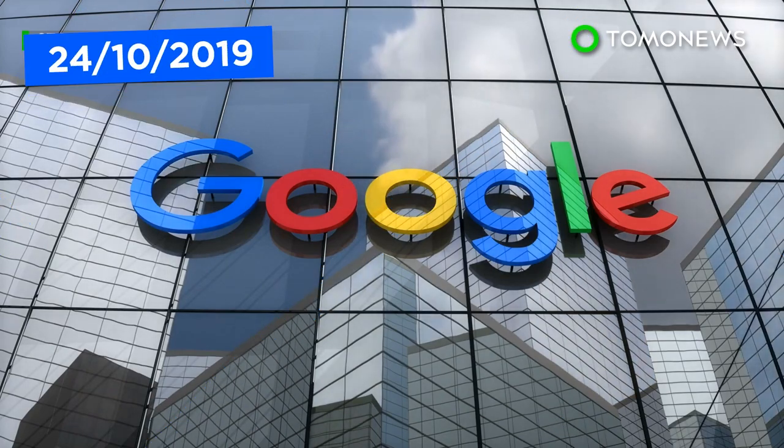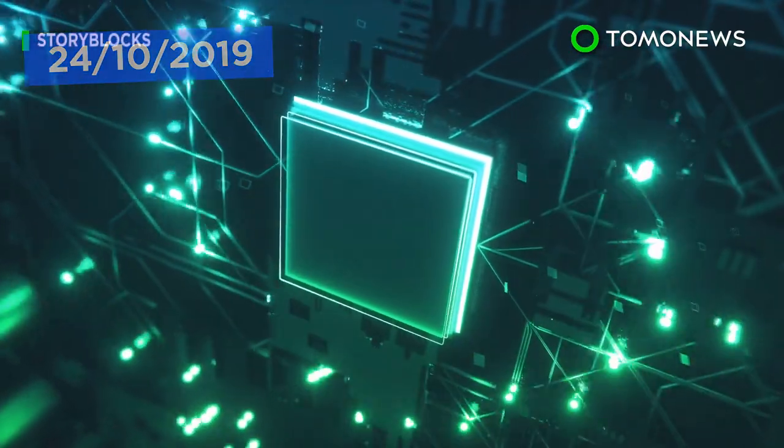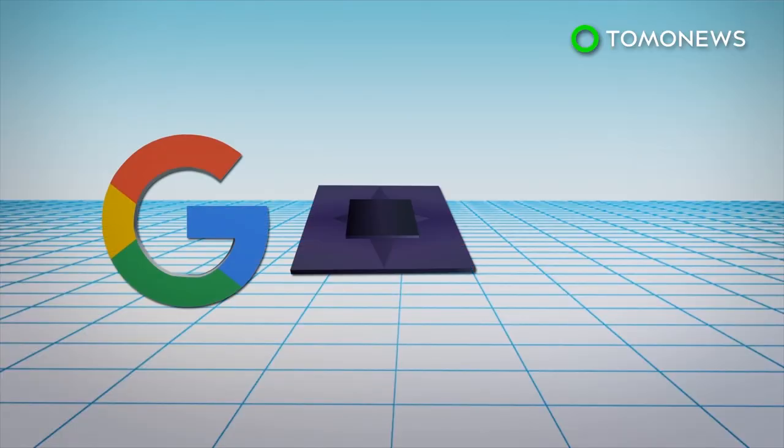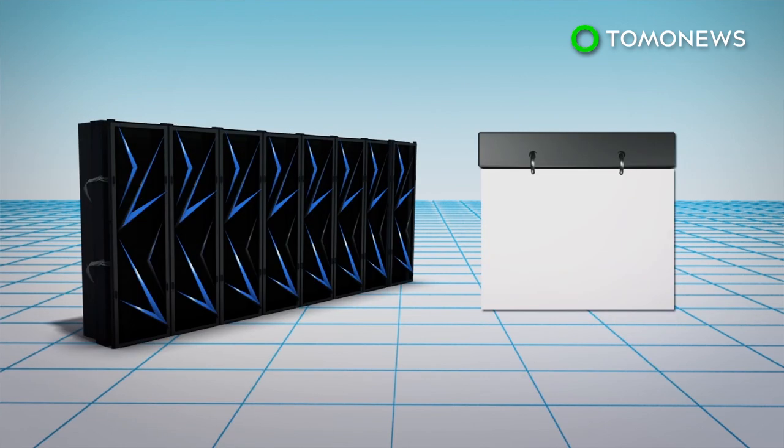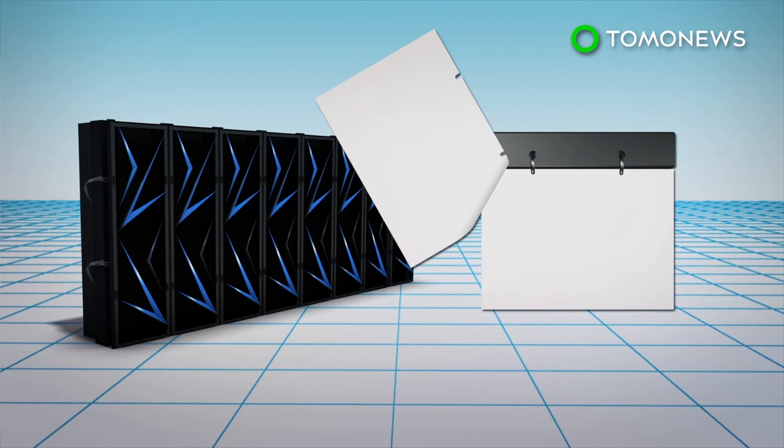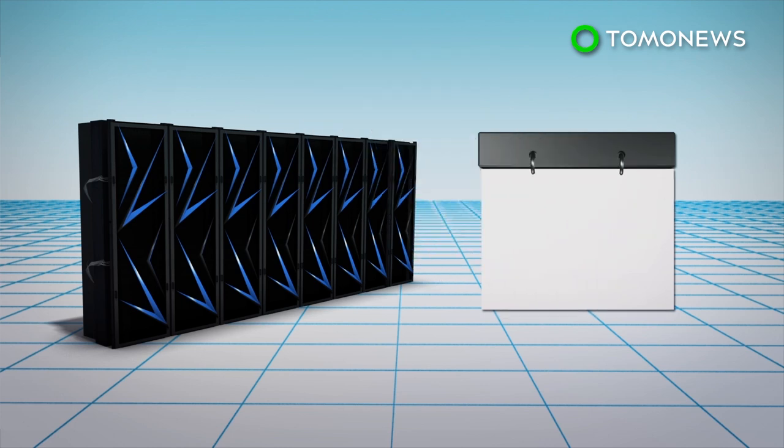Google says its supercomputer has achieved quantum supremacy. New research by Google has shown that its Sycamore quantum processor was able to perform a target computation in 200 seconds. In a blog post, Google explained that the same experiment would take the world's fastest supercomputer approximately 10,000 years to produce a similar result.